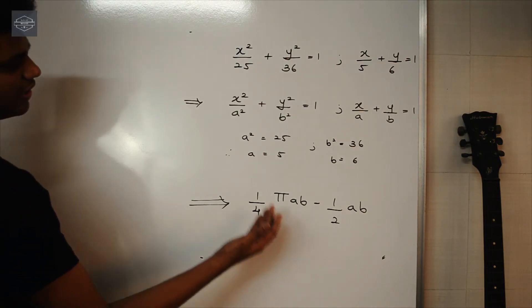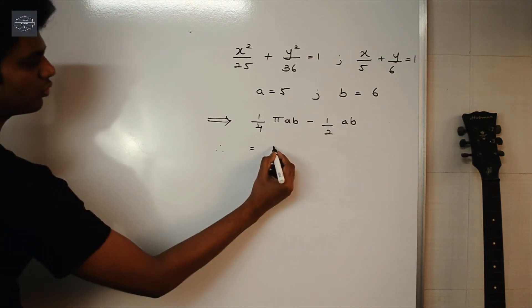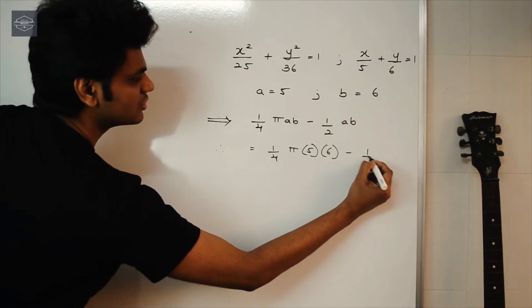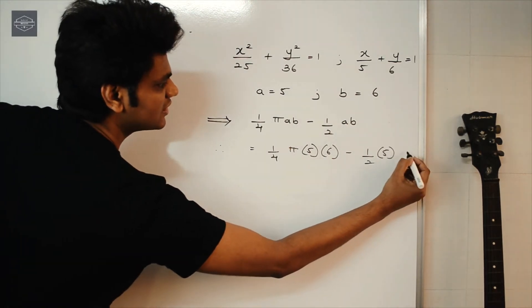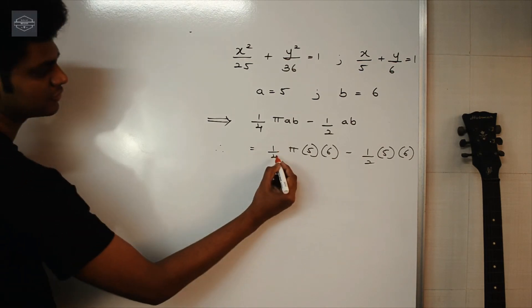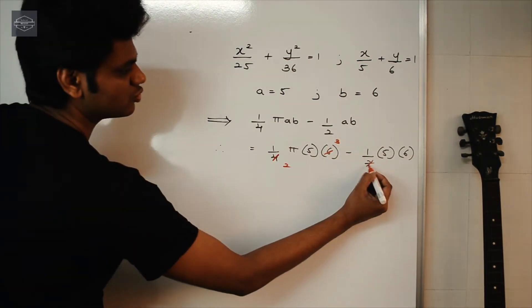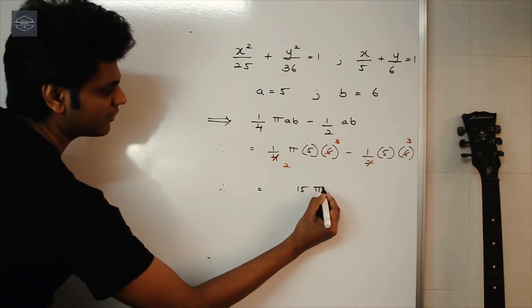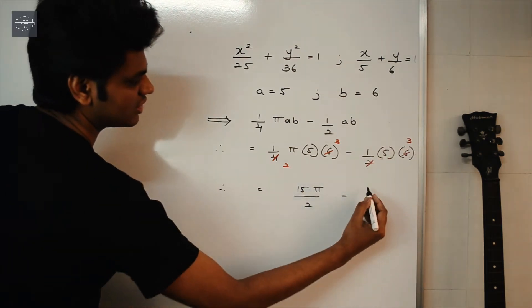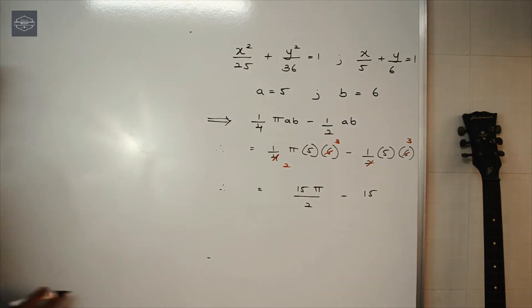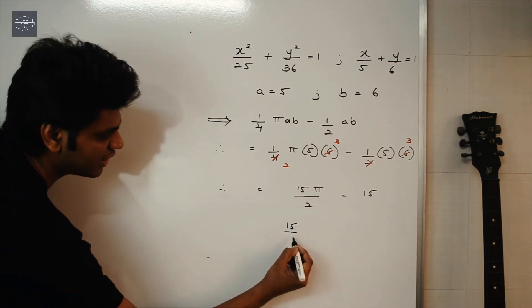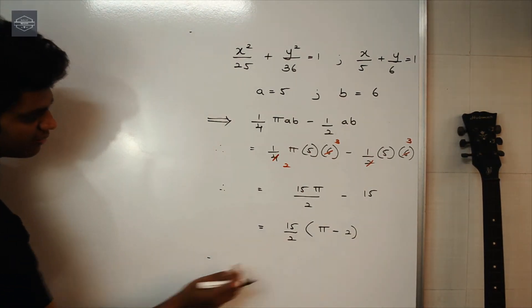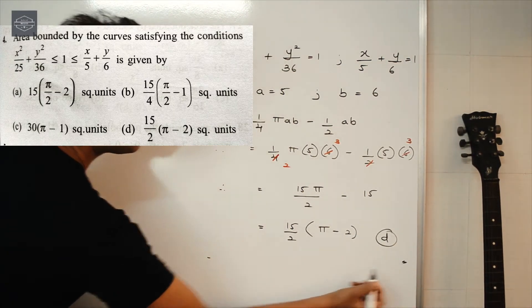Putting in the values: (1/4)π × 5 × 6 − (1/2) × 5 × 6. This gives 15π/2 − 15/2. Taking 15/2 common from both terms, we get (15/2)(π − 2), which is the right answer — option D.